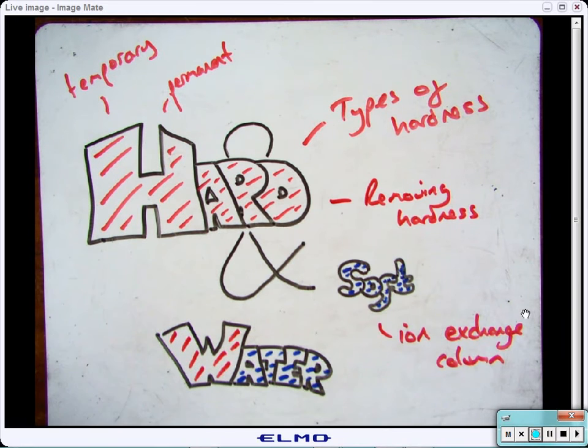This video is going to look at hard and soft water, in particular the types of hardness: temporary and permanent hardness. It will focus on how we remove it using an ion exchange column.